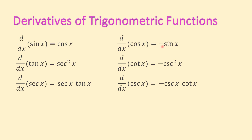When memorizing this table, it is helpful to notice that minus signs go with the co-functions — that is cosine, cotangent, and cosecant. Also note that if you memorize the derivative of tangent, you can derive the derivative of cotangent: add a 'co' to both sides of the relation and remember that co-functions carry a negative sign. Similarly, from the derivative of secant — secant times tangent — you can find the derivative of cosecant: it is negative cosecant times cotangent.